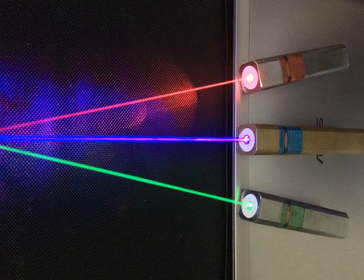The ND:YVO4 or other ND-doped crystal is coated on the diode side with a dielectric mirror that reflects at 1064 nm and transmits at 808 nm. The crystal is mounted on a copper block, acting as a heat sink.